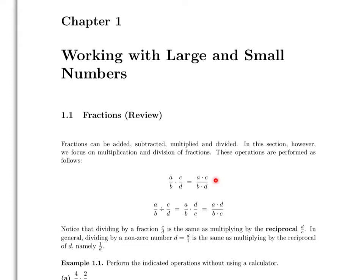To multiply two fractions, a over b times c over d, we simply multiply the numerators of the fractions and the denominators of the fractions. Notice there is no need to find a common denominator. To divide the fraction a over b by the fraction c over d, we turn the division into multiplication. Instead of dividing by the fraction c over d, we instead multiply by the fraction d over c. This is called multiplying by the reciprocal, because the fraction d over c is called the reciprocal of the fraction c over d.